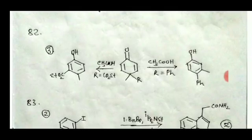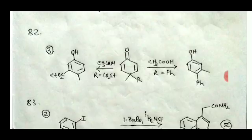For question number 82, this is basically a dienol-phenol rearrangement and you have to look into the migrating aptitude of the two different groups. In the given reaction condition, the R group is an electron-withdrawing group, and that's why it will migrate rather than the methyl group, so that the less stable carbocation is left behind. Option 3 is the correct answer.